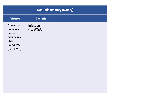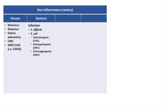The highest risk antibiotics for causing C. diff colitis are clindamycin, fluoroquinolones, broad-spectrum penicillins, and third-generation cephalosporins. E. coli, specifically the enterotoxigenic, enteropathogenic, and enteroaggregative subtypes.